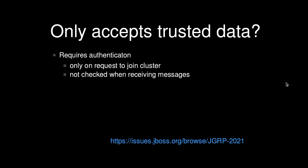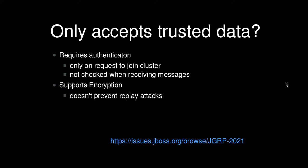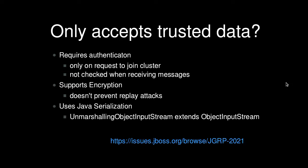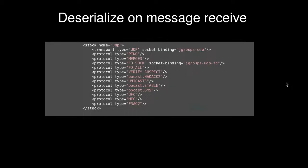JBoss had some authentication, and you'd think that if you trust the message senders you don't have to worry about the exploit. But it turns out authentication only worked when a new member tried to join the cluster — it's not actually checked when any type of message is received. JBoss clustering supports encryption, but that doesn't prevent replay attacks. Also interesting: JBoss actually extends the deserialization mechanism — extends ObjectInputStream — so the ObjectInputStream class is not exactly the one to look for; there's one that extends the functionality. That may be the case in your applications too.